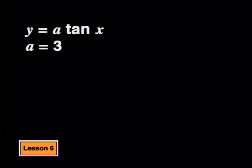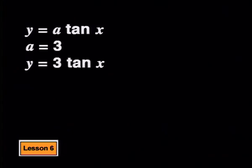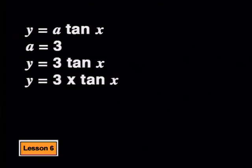Let's start with a equal to three. How do you expect the parent tan graph to change if a is 3? The equation of the new graph will be y equals 3 tan x. 3 tan x means 3 multiplied by the whole function tan x, so the y value of every point on the parent graph is multiplied by 3.